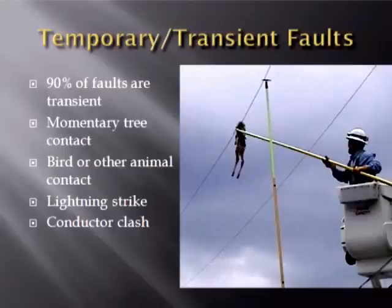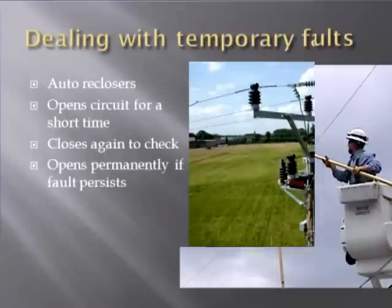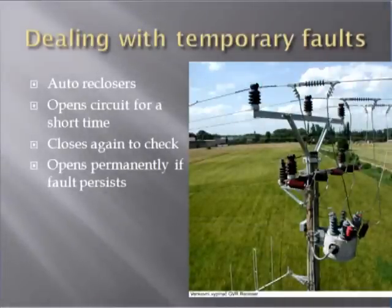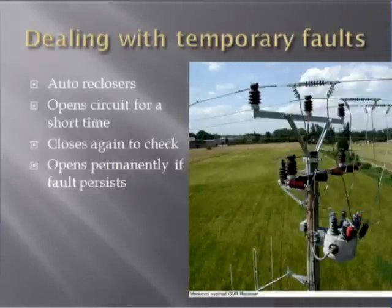How do we deal with this temporary fault? We can use a circuit breaker, but the disadvantage is that it has to be manually closed. If such a fault occurs in a remote area, it will take a long time to restore power. As such faults are quite frequent, a better solution is the auto recloser. In a power distribution system, a recloser is a circuit breaker equipped with a mechanism that can automatically close the breaker after it has been opened due to a fault. Since many transient faults clear themselves, a recloser improves service continuity by automatically restoring power to the line.